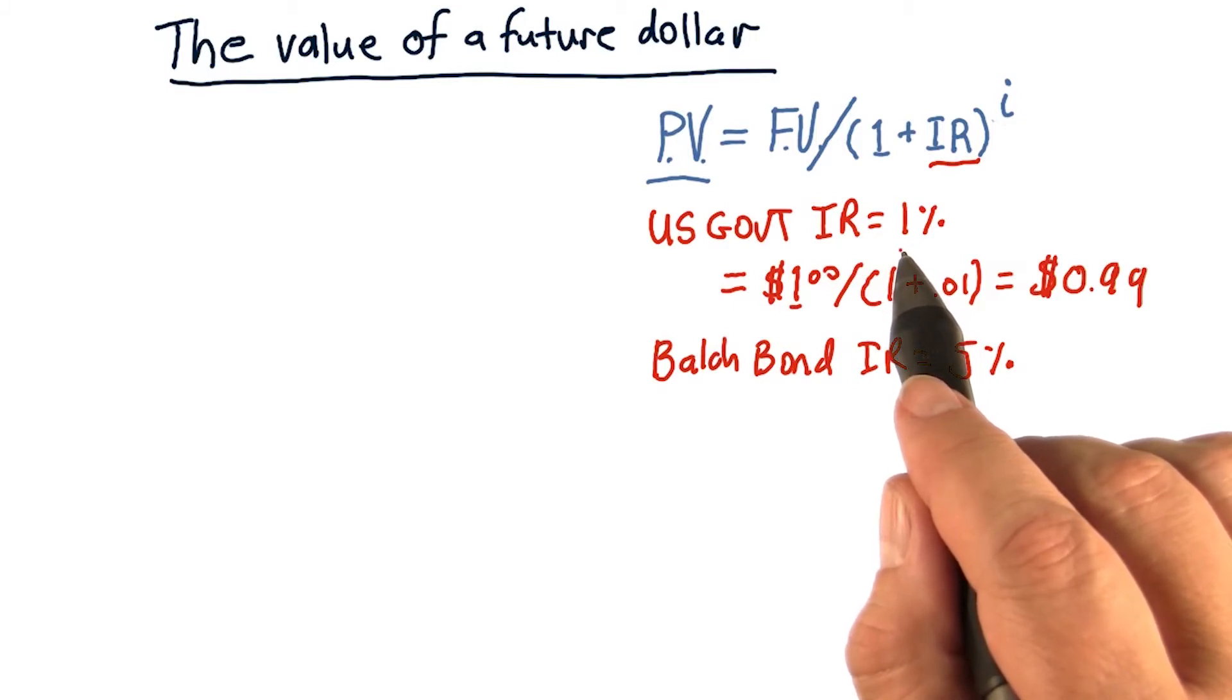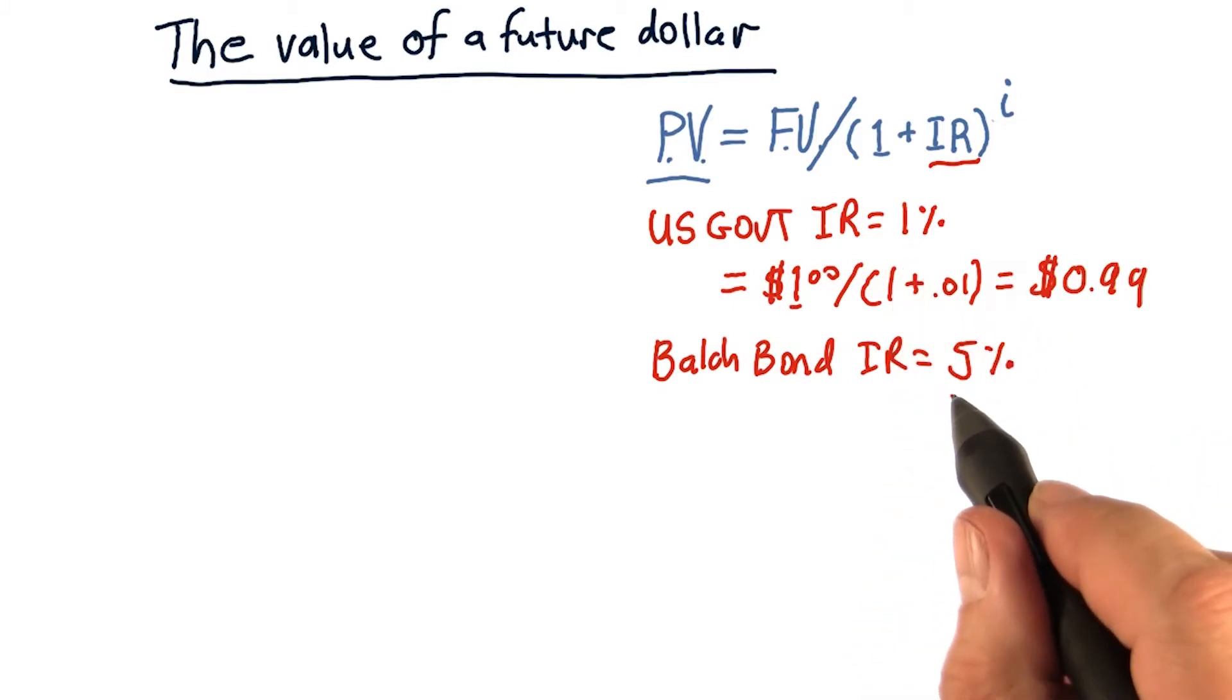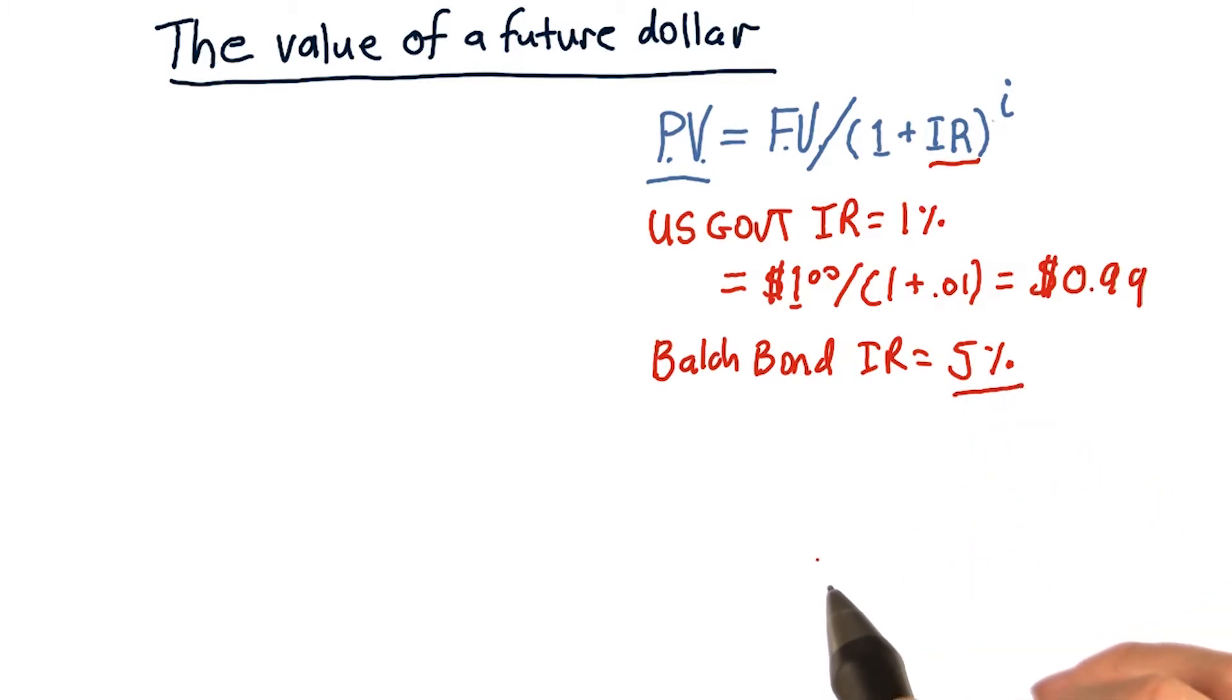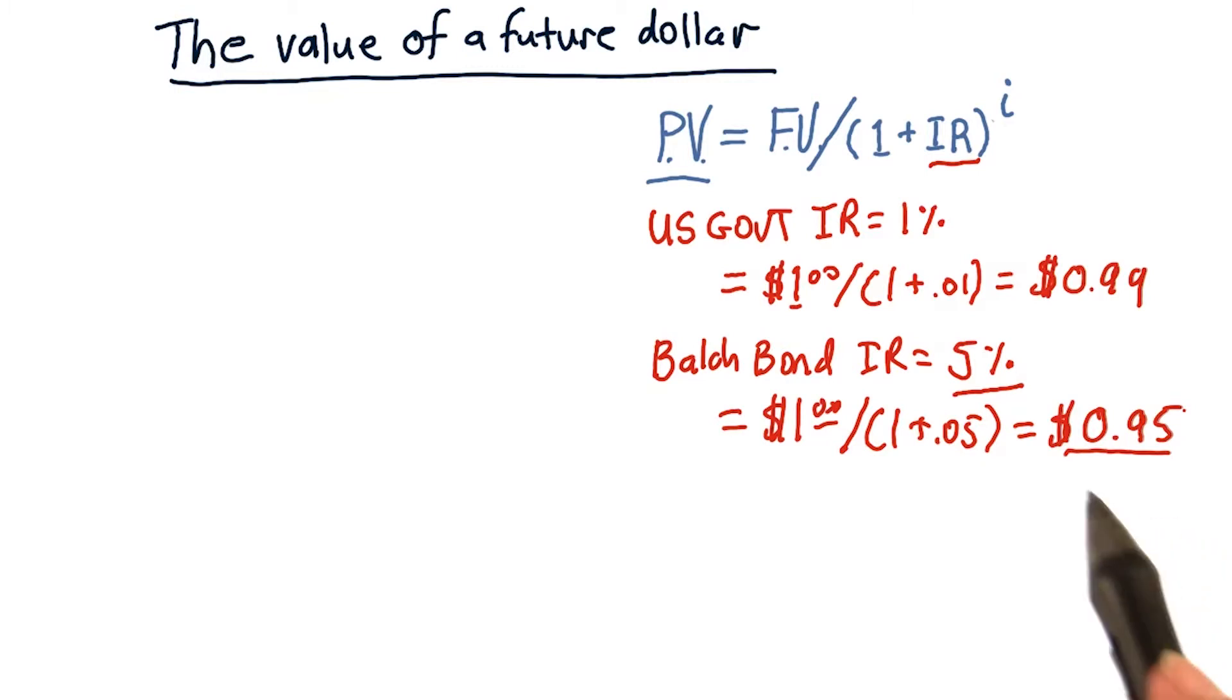So how can I attract you? Well, I can offer you a higher interest rate, let's say 5%. And that works out to a value of about 95 cents. In other words, in order for me to attract you to buy my promise for a $1 in the future, I could only charge you 95 cents.